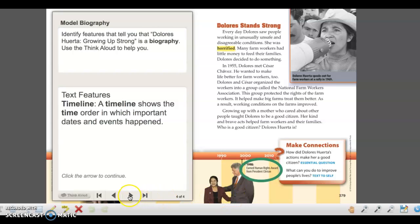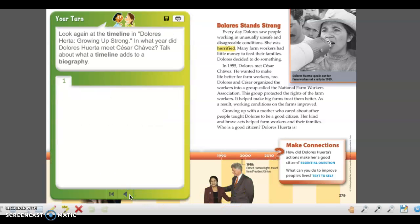Now let's practice. As you listen to the passage again today, I want you to look at the timeline on pages 378 and 379. And here's the question I want you to try to answer: in what year did Dolores Huerta meet Cesar Chavez? You're going to need to look at your timeline.